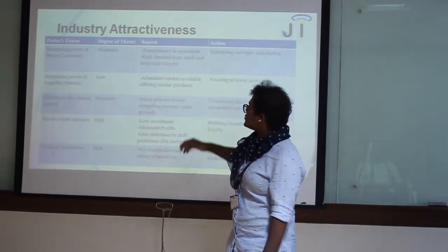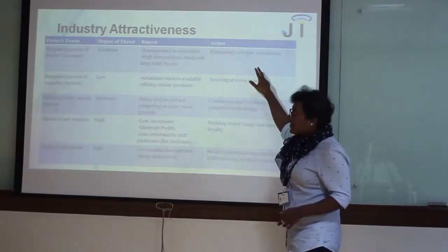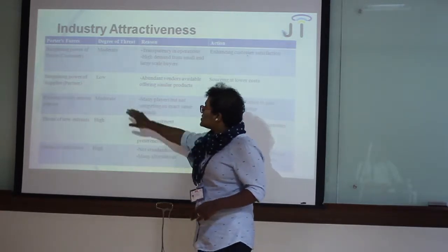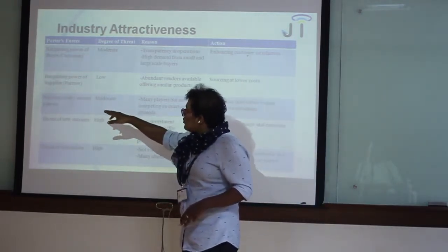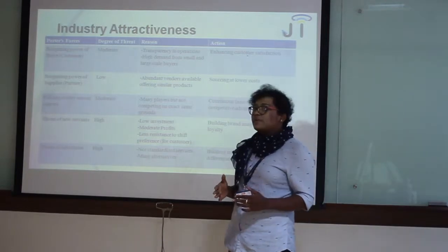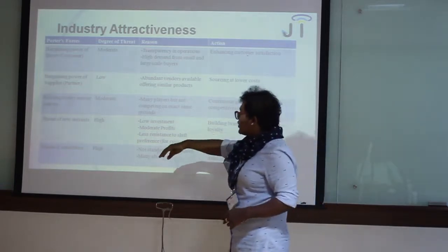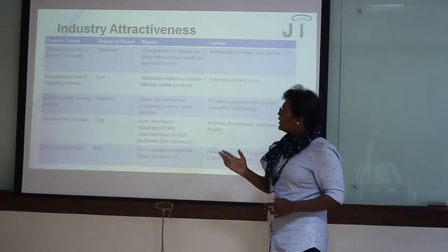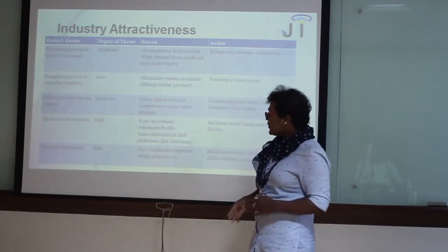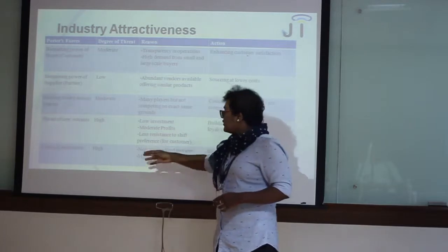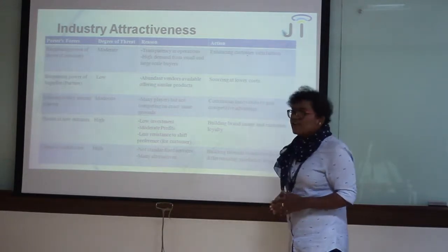Industry attractiveness using Porter's Five Forces: First, bargaining power of buyers is moderate, so the industry is focusing on customer satisfaction. Second, bargaining power of suppliers is low, so the industry is focused on lowering the cost of the product. Third, existing rivalry among players is moderate, so the event management industry is mainly focused on innovating new ideas to gain competitive advantage. Fourth, threat of new entrants is high, so the industry is focused on branding image and customer loyalty. Fifth, threat of substitutes is also high, so the industry is mainly focused on differentiating the product in the market.